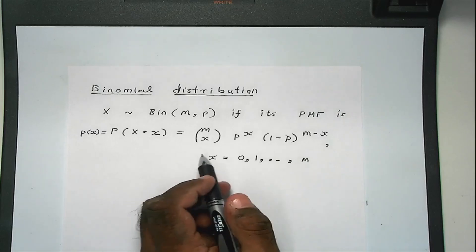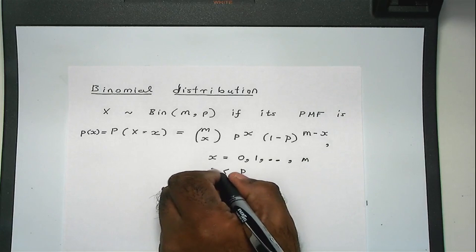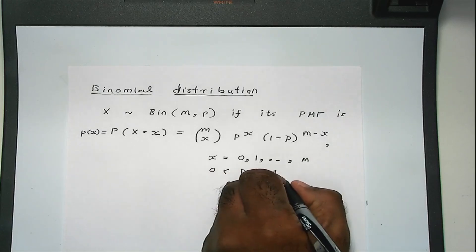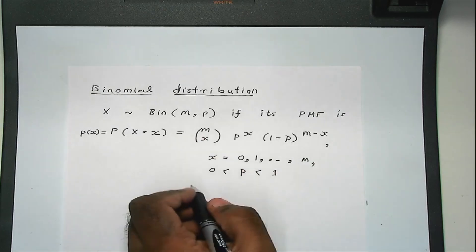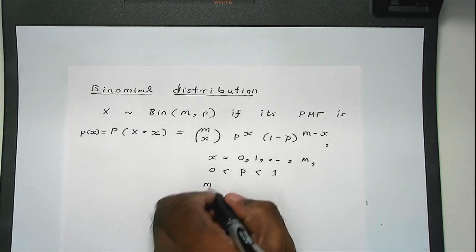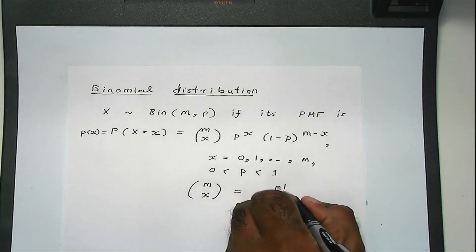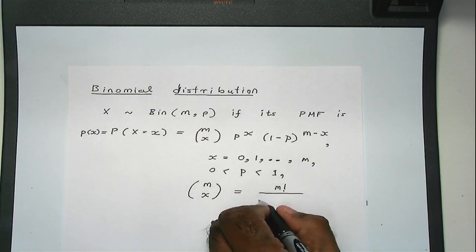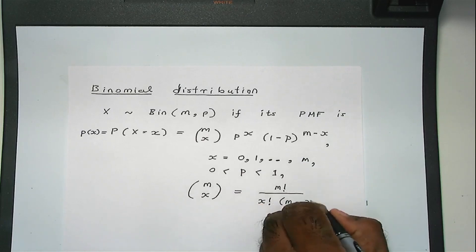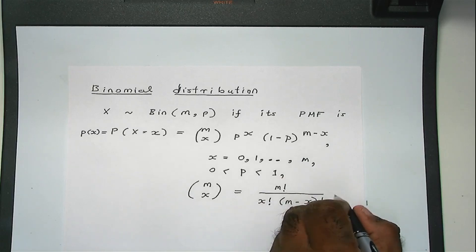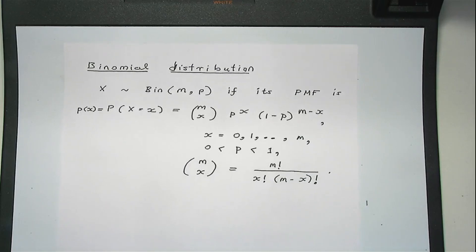And m is an integer, and p is a number between 0 and 1. And m choose x, I'm sure you know, is defined as m factorial divided by x factorial times m minus x factorial. So this is the probability mass function of the binomial distribution.